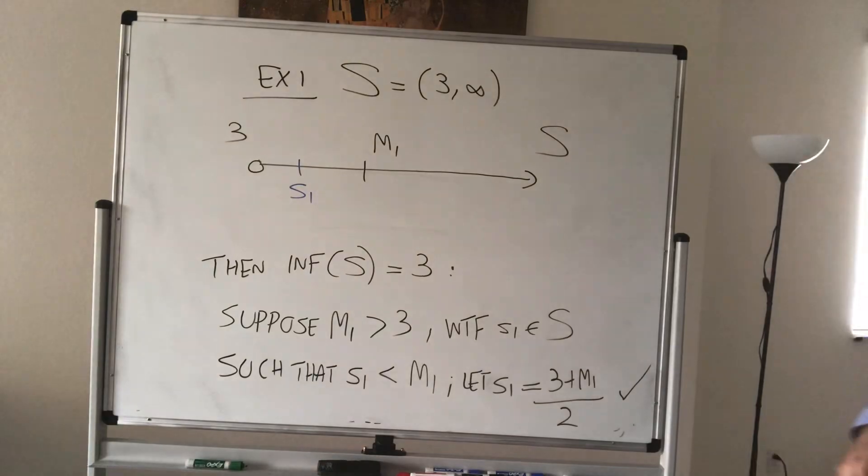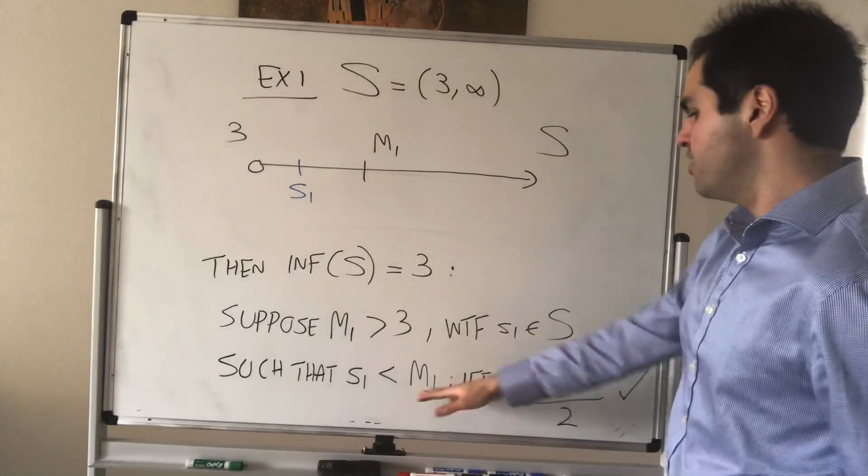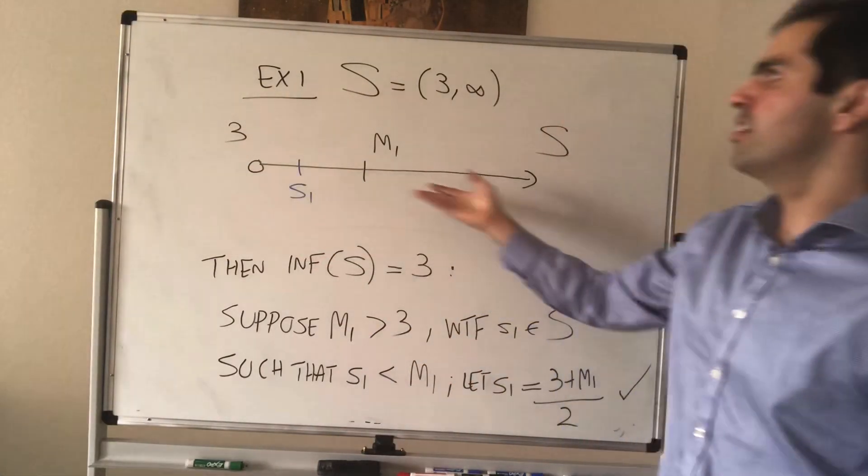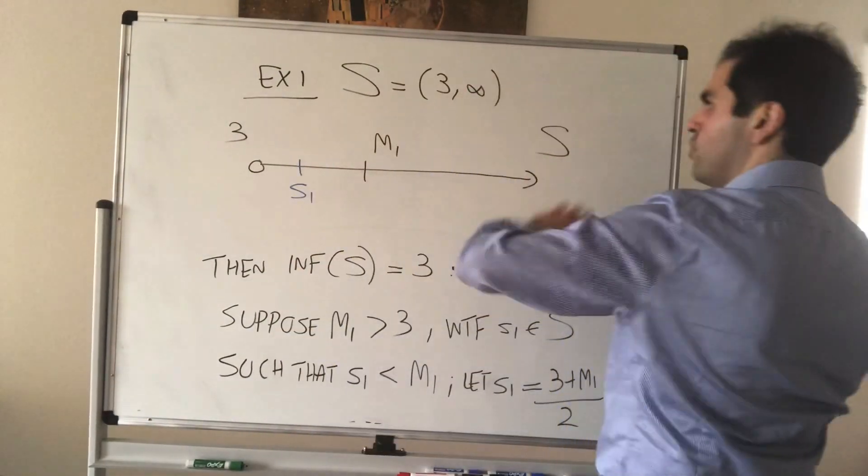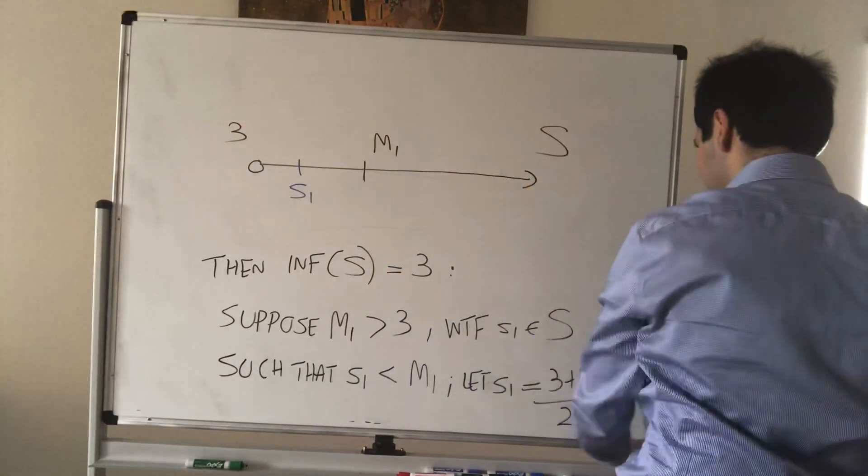So, let S1 to be just a midpoint between 3 and M1, and you can show that, in fact, S1 does the trick. In other words, S1 is indeed smaller than M1, because it's a midpoint, but also S1 is strictly greater than 3, so it is in your set. So, again, you can watch the sup video to see the details of this.